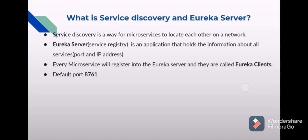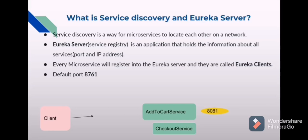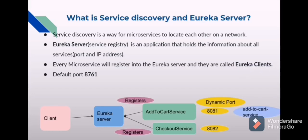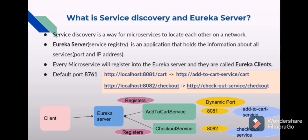The default port number for the Eureka server is 8761. For example, a client is trying to access the add-to-cart service and checkout service in an online shopping portal. The add-to-cart service is running on port 8081 and the checkout service is running on port 8082, and sometimes these can be dynamically changing. It will be difficult for the client to find the exact port numbers. So the add-to-cart service and checkout service get registered into the Eureka server with names like 'add-to-cart-service' and 'checkout-service', and the URLs with port numbers get replaced by these names. This makes it easy to get the correct URL for these services.